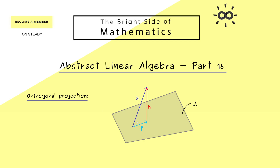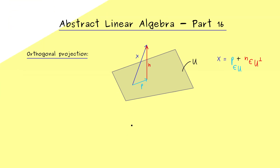The best thing we have is this picture here, where we can see that each vector in the vector space can be decomposed in this way. For a subspace U we have a vector p in the subspace and a vector n which is orthogonal to the subspace, meaning n lies in the orthogonal complement of U. The vector p that lies in U is what we call the orthogonal projection of the vector x onto the subspace U. Now we will show how we can calculate this vector p for a given subspace U.